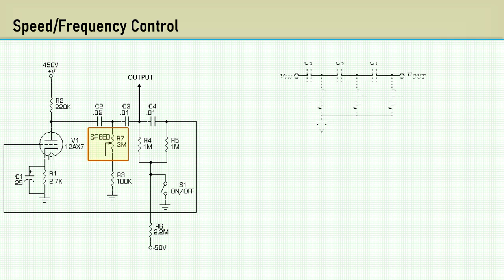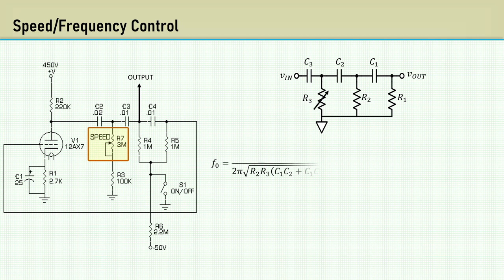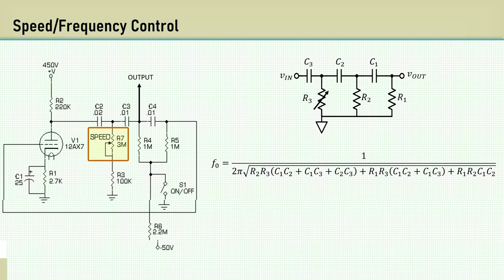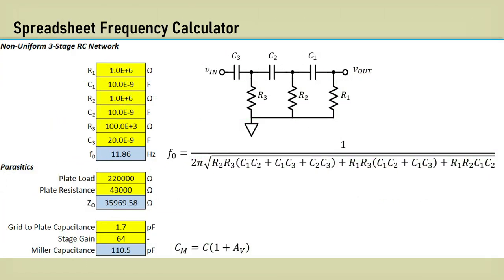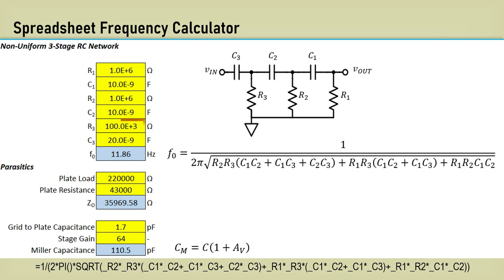Here's the simplified network with the reference designator R3 as variable. When the component values are non-uniform, this equation can be used to calculate the frequency based on unique values of all components. It's very nice to use a spreadsheet for such a calculation. By naming the cells by their reference designators, construction of the formula is a breeze. With R3 at the minimum value of 100k, the result is a frequency of 11.86 hertz.